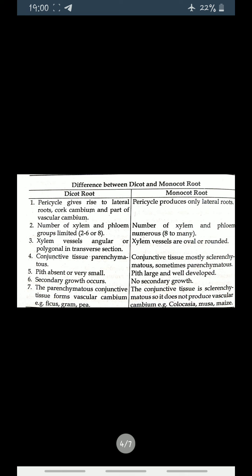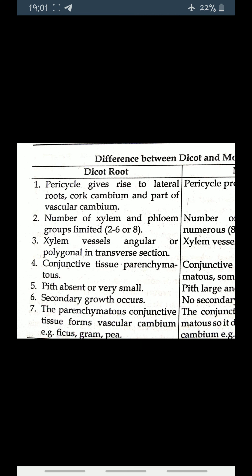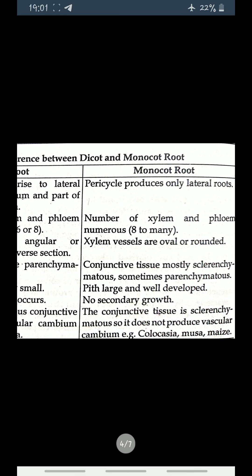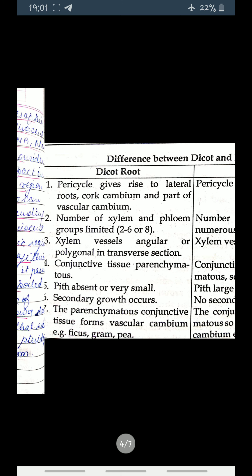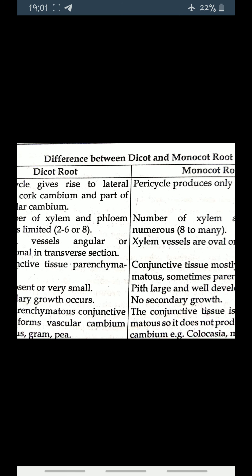Here is the difference between dicot root and monocot root. In dicot root, the pericycle gives rise to lateral roots, cork cambium, and part of the vascular cambium. In monocot root, the pericycle produces only lateral roots. In dicot root, the number of xylem and phloem groups are limited, whereas in monocots, the number of xylem and phloem groups are numerous.